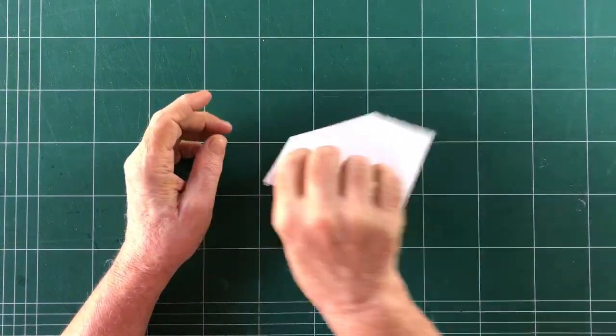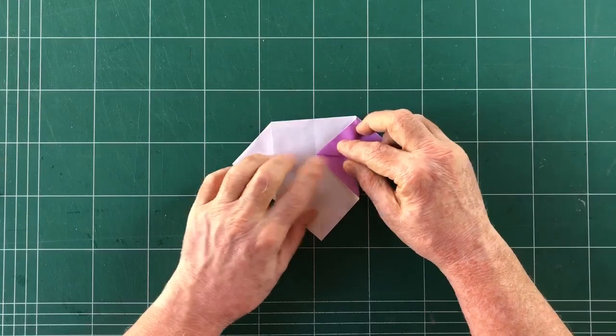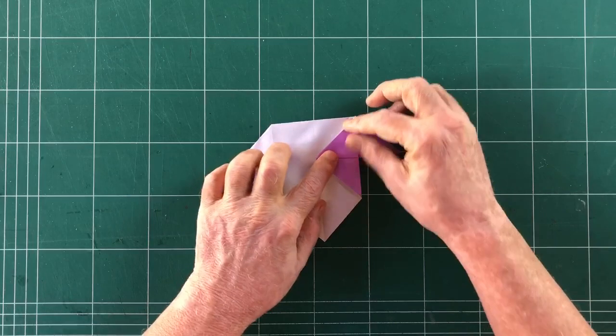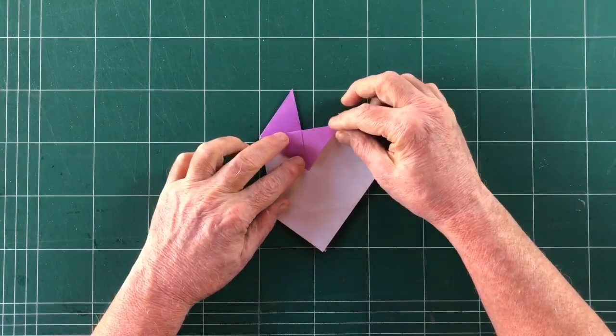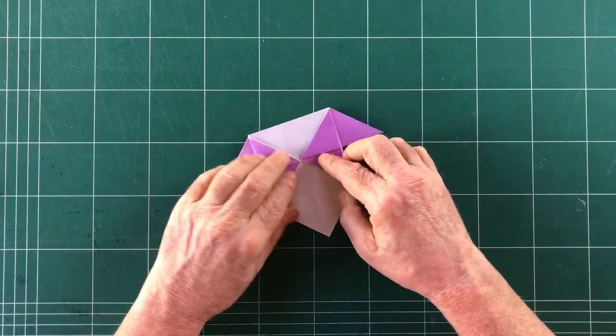Turn over and we do the same thing. So again left and right to the centre point and we leave these triangles here in the middle sticking out. So first one side and the other side. That's not quite straight. There we go. Better.